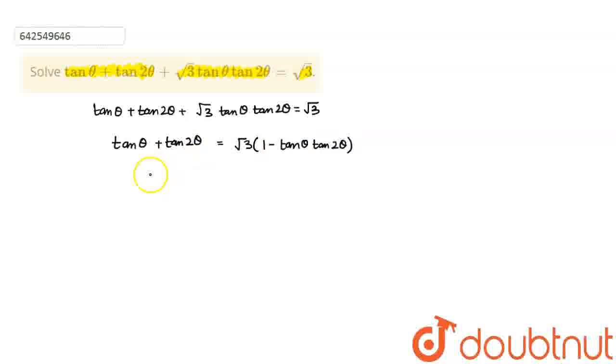I'll get tan theta plus tan 2 theta is equal to root 3 times 1 minus tan theta tan 2 theta. And I can apply the formula. I am having tan A plus tan B which is nothing but tan A plus tan B upon 1 minus tan A tan B.